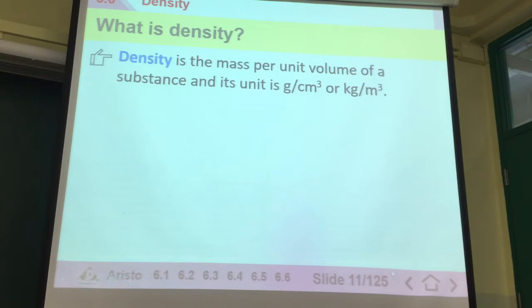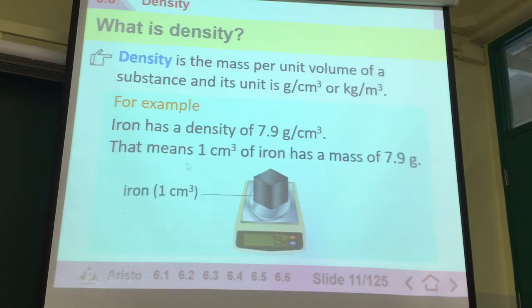Density is the mass per unit volume. You see that the mass is in terms of gram or kilogram. It's per volume, so it's divided by the volume. In here it's cm³ or m³. In our experiment we will be using cm³. Here's an example of iron: it has a density of 7.9 g per cm³. If we have one cm³, the weight would be 7.9 g. That's what it means by this unit.